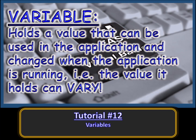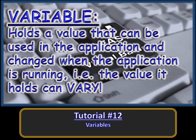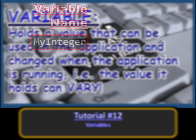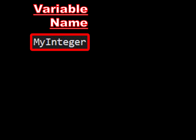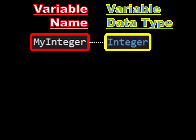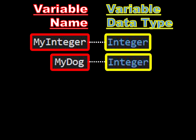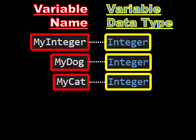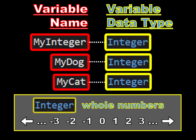So what is a variable? A variable is simply a value that can change, depending on conditions or on information passed to it when an application is running. A variable has two main parts: a name and a data type. The variable name can be anything we choose. For example, we could have a variable called my_integer and its data type could be integer. An integer is just a whole number, that is, a number without any decimals.